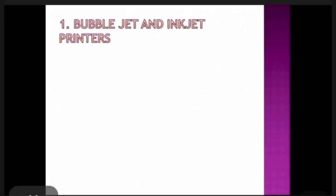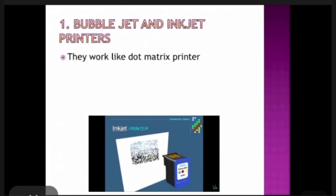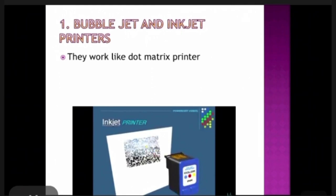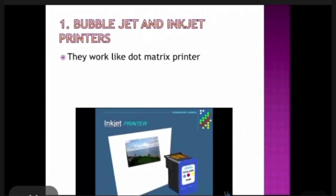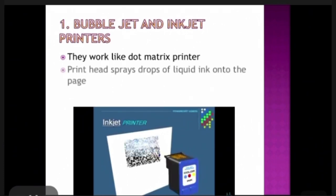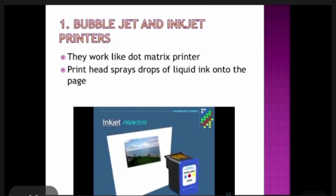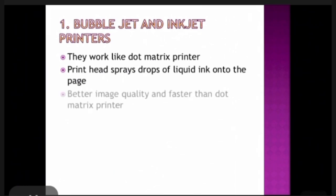Bubble jet and inkjet printers work similar to dot matrix printers, but instead of pressing dry ink, the print head sprays drops of liquid ink onto the page. They provide better image quality and are faster than dot matrix printers, but they get blurred when they get wet.